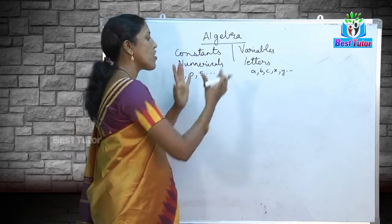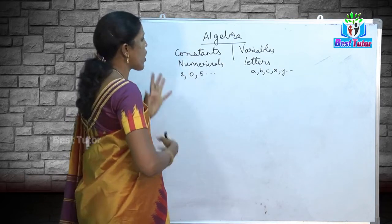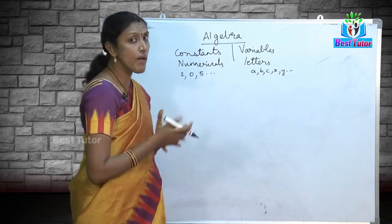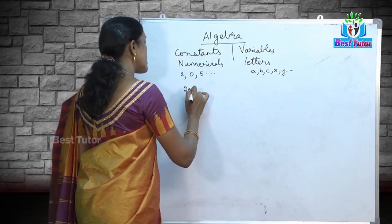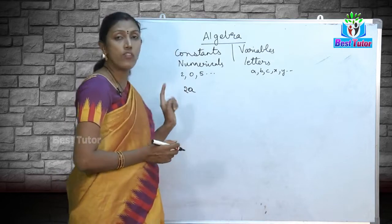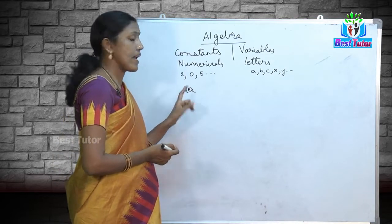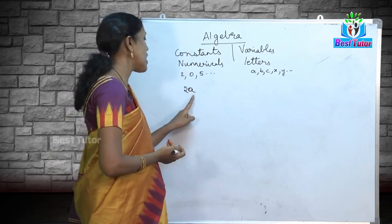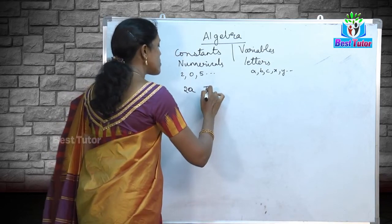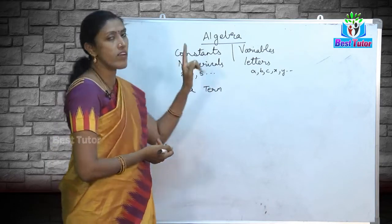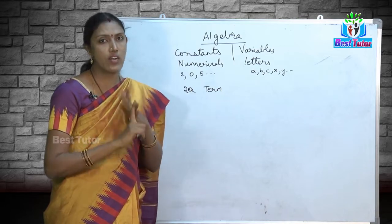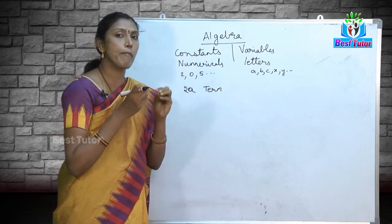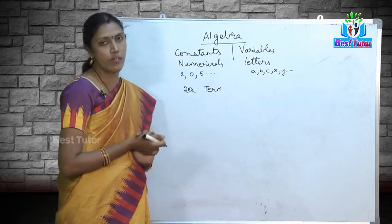I have a group of all numericals and a group of all variables. If I pick up one constant and one variable and multiply them together — for example, 2 into a gives 2a — the value of 2a will vary depending on the value of a. Such a combination of constants and variables using multiplication and division only is called a term.